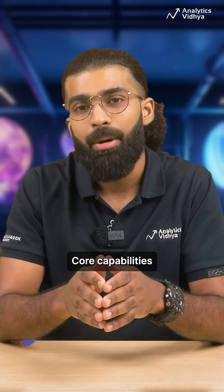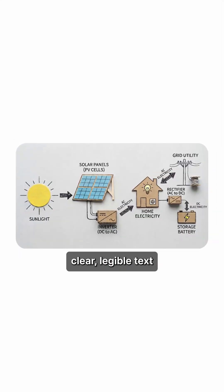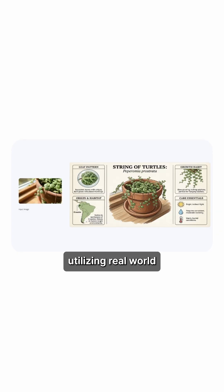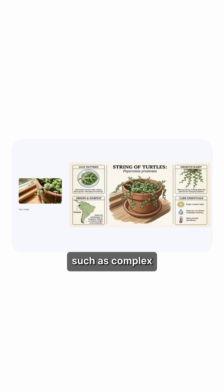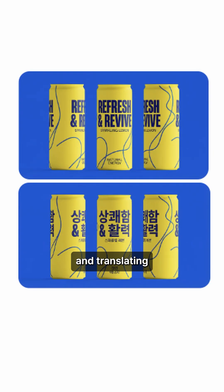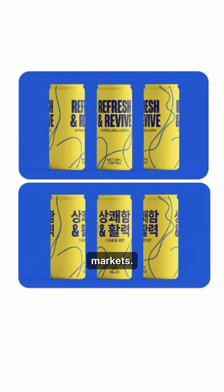Core capabilities include generating clear, legible text for intricate diagrams and posters, utilizing real-world knowledge for precise results such as complex infographics or historically accurate scenes, and translating and localizing text within images for international markets.